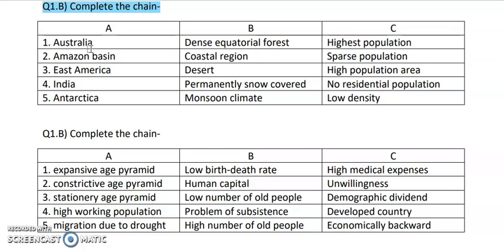I will show you a sure shot method. Now India has a monsoon type of climate, so match India with monsoon. Antarctica is not a desert, not monsoon climate, not coastal region, not equatorial forest — we all know Antarctica is a polar area, it is at the pole, so it is permanently covered by snow. Match Antarctica with permanently snow covered.